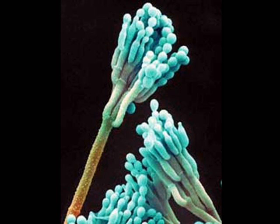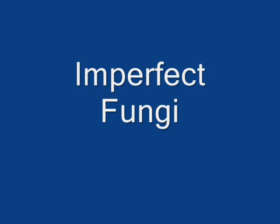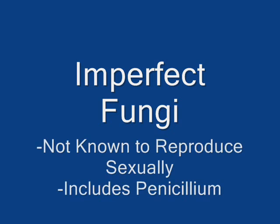Our final group is the imperfect fungi. The picture here is an up-close version of penicillium, the source for an important antibiotic — you know it as penicillin. There are 25,000 species in this group. The imperfect fungi are characterized by the fact that, to the best of our knowledge, they do not reproduce sexually at all. They only reproduce asexually, which sets them apart from the thread-like, sac, and club fungi. Remember, we separate them by how they reproduce and the appearance of their spore-producing structures.